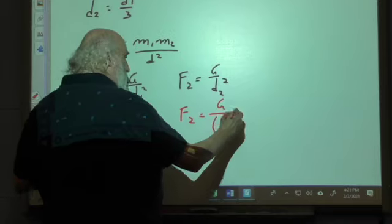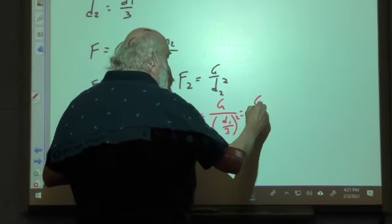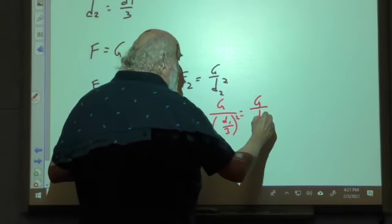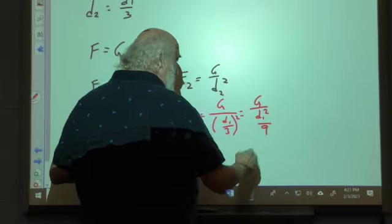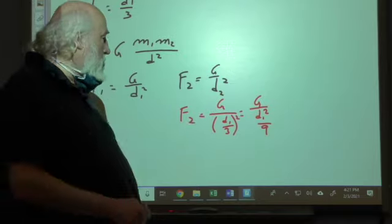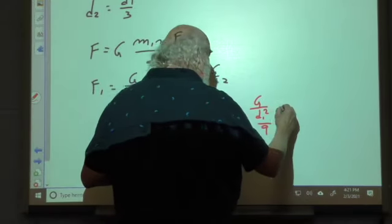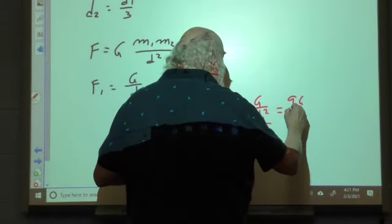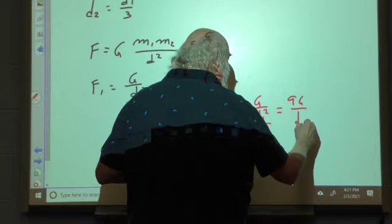And that's going to be equal to G over d1 squared over 9. Now we have a denominator over a denominator, it's going to go to the numerator. So that's going to be 9G over d1 squared.